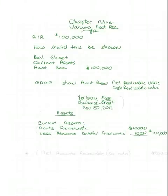On a partial balance sheet, I have the company name, the name of the statement, and that it's as of a point in time. Under current assets, I have accounts receivable of a hundred thousand dollars. I've made an estimate that I expect to collect only ninety thousand of those, so I'm showing an account called Allowance for Doubtful Accounts and deducting it from accounts receivable. It's the first time you've seen this account, Allowance for Doubtful Accounts.